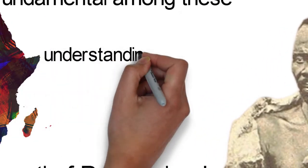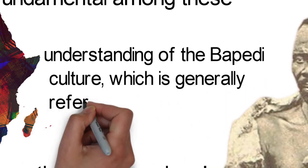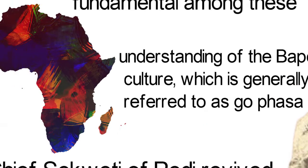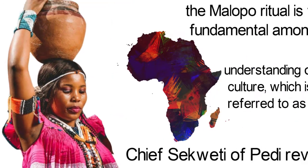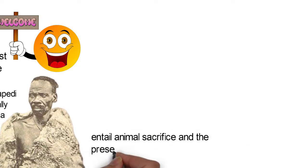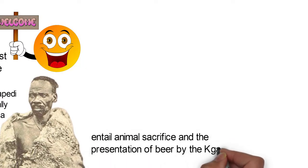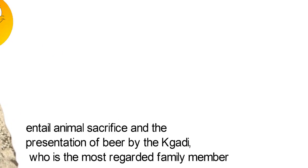Malopo is the understanding of the Bapedi culture, which is generally referred to as Go Fasa. Every Bapedi native is expected to be well informed on their culture. Their rituals usually entail animal sacrifice and the presentation of beer by the Gadi, who is the most regarded family member.